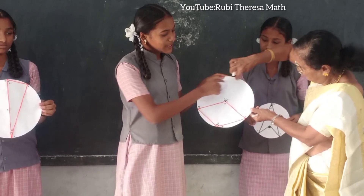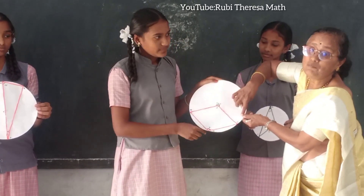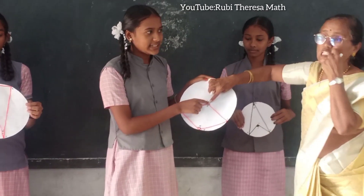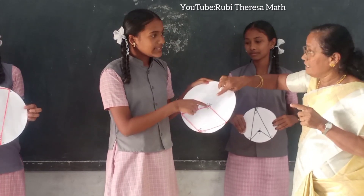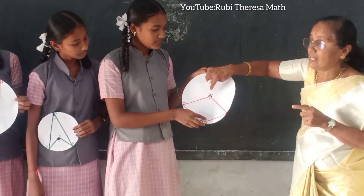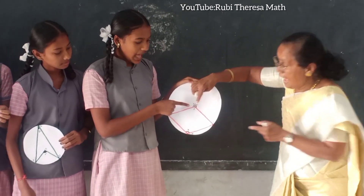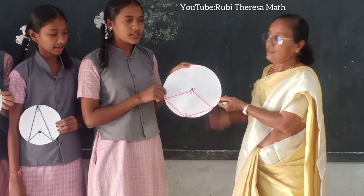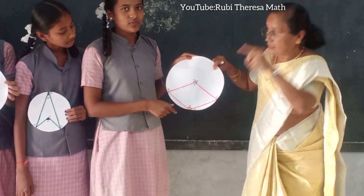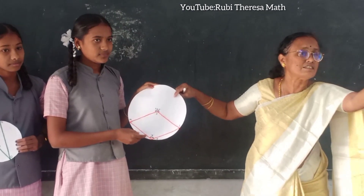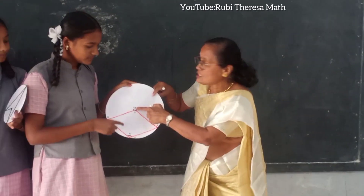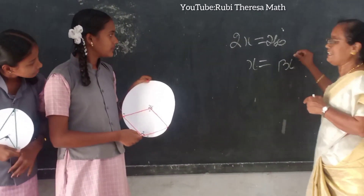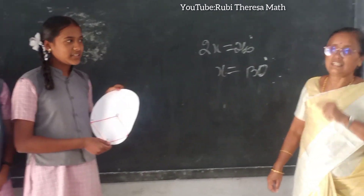Which one is the arc? The angle subtended by arc ML at the centre is 260 degrees. It is double the angle at any point on the remaining part of the circle. So the angle given is double the value of X. 260 is nothing but 2X. So 2X = 260 degrees, therefore X = 130 degrees. Clap your hands.